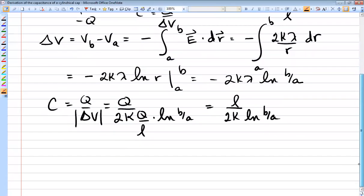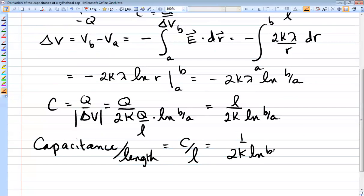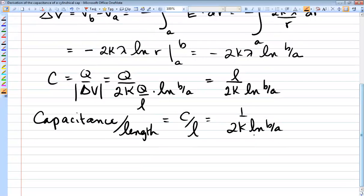Now often what we do is we define a capacitance per unit length for these long cylindrical capacitors. So the capacitance per unit length would be C over L. So it's just 1 over 2k ln B over A. Now notice how this only depends on the geometry. It's the dimensions B and A that determine the capacitance.